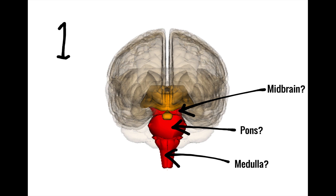To answer the first question, we'll need to use what we know about the cranial nerves in each region. Recall the rule of fours, which states that the first four cranial nerves exit from the brain and midbrain, with three and four specifically exiting from the midbrain, while the middle four exit from the pons and the last four exit from the medulla.